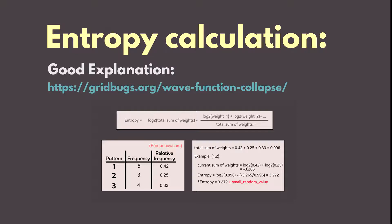We use an example that presents how to calculate a cell that has 1 and 2 as possible indices. Please feel free to stop the video and study the example. The entropy is calculated according to the equation shown above. And the value is 3.272.